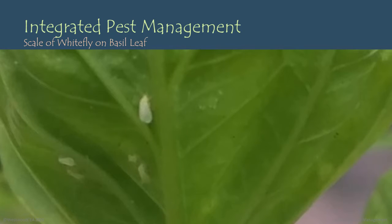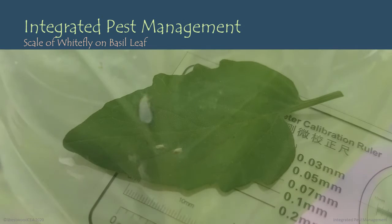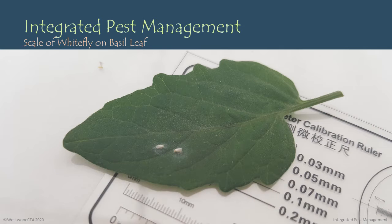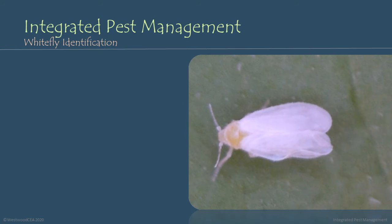To get a sense of scale and understand how small whiteflies are, here's a picture of a single whitefly on the bottom of a basil leaf, and another picture of two whiteflies sitting on a small leaflet of a tomato leaf. Notice the small white powdery appearance around the actual whiteflies — this is a very strong indicator of a whitefly infestation. Sometimes you might see that white powdery appearance on your leaves even if you don't see the whitefly itself.